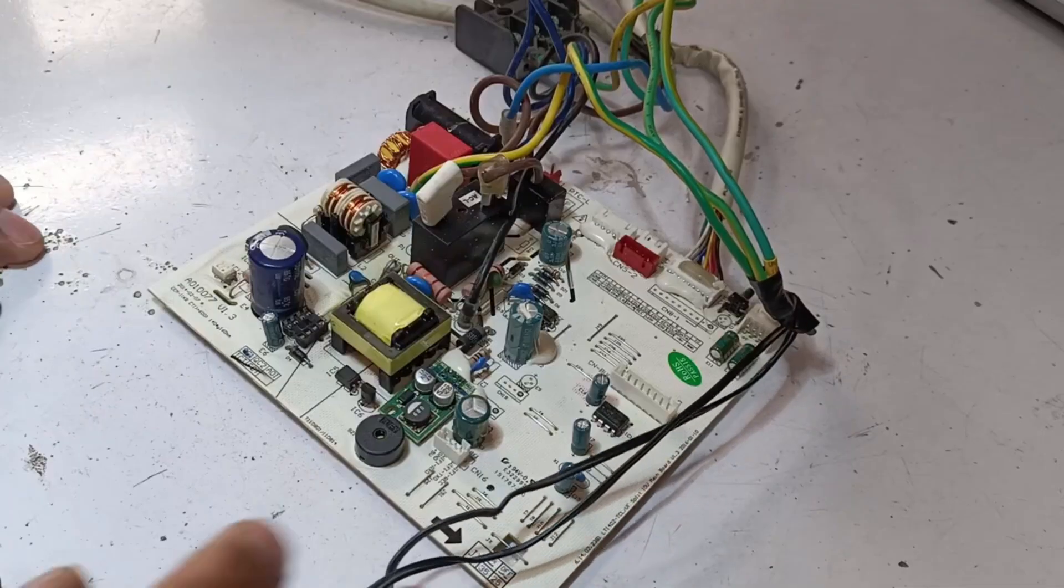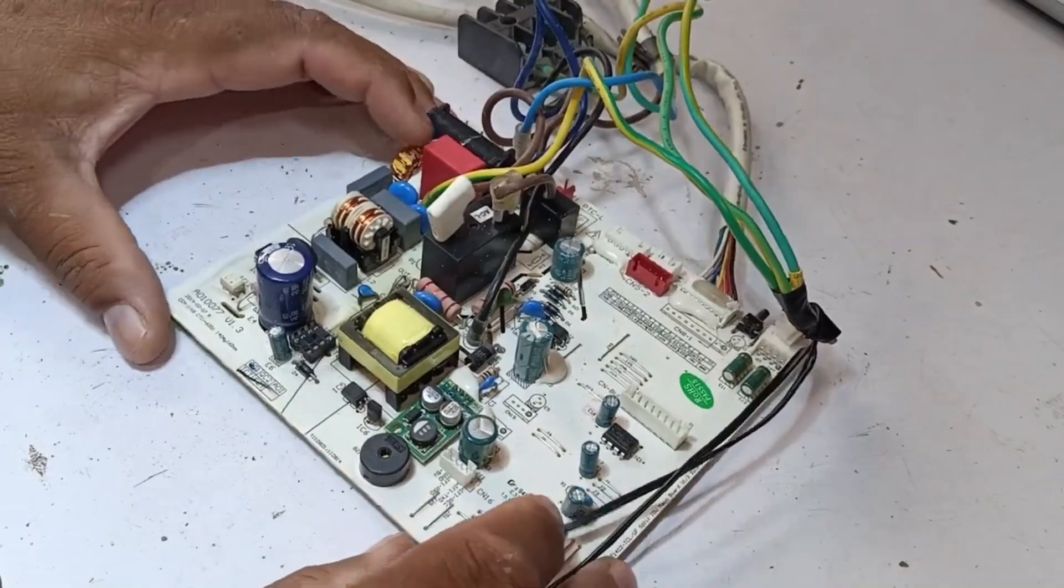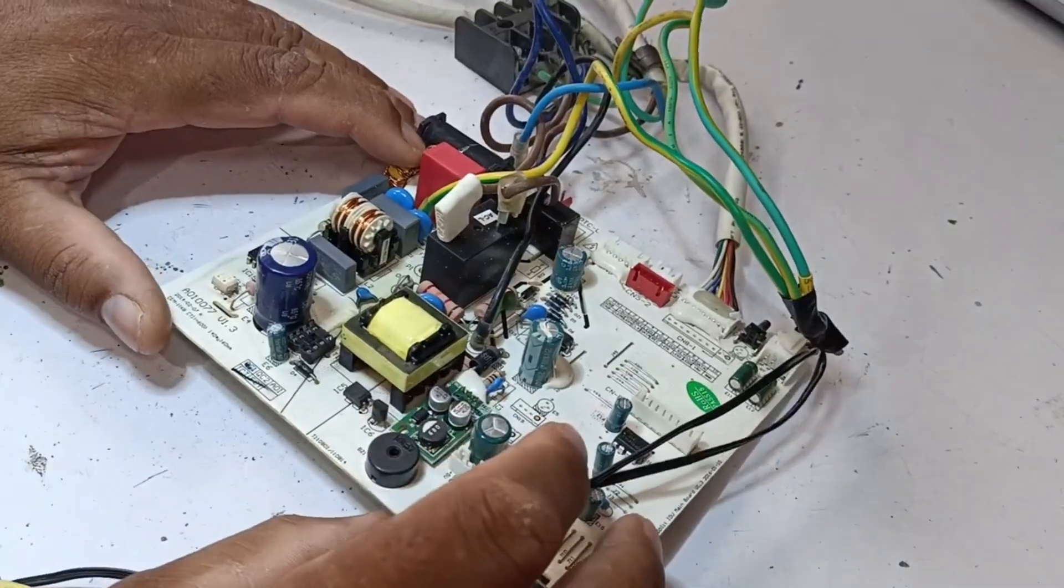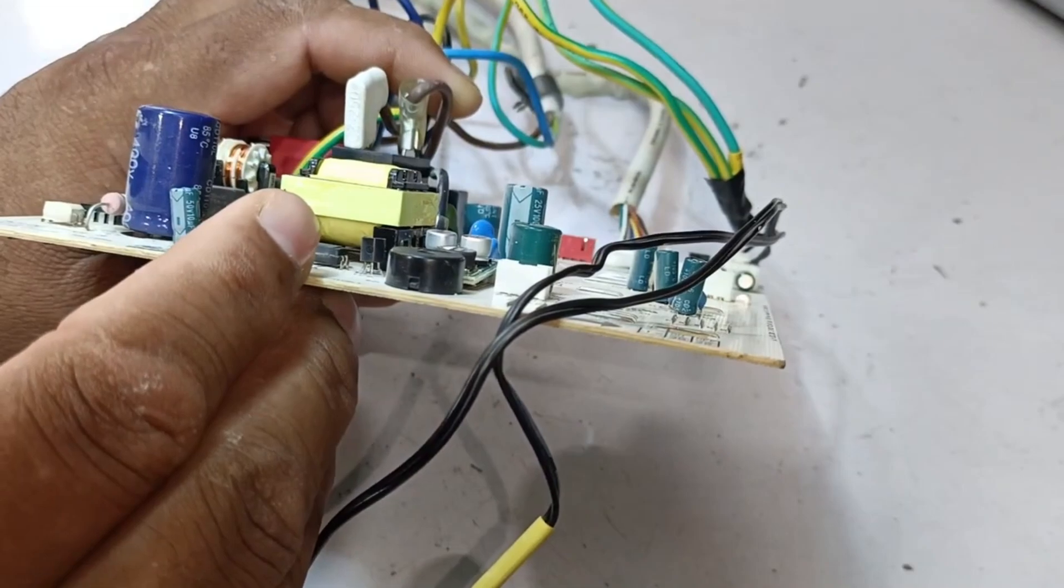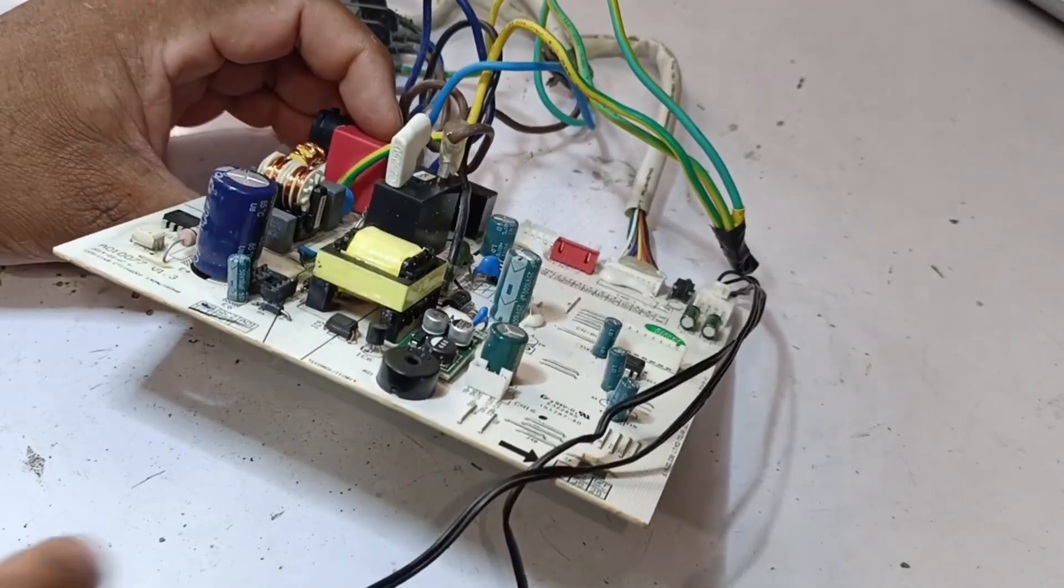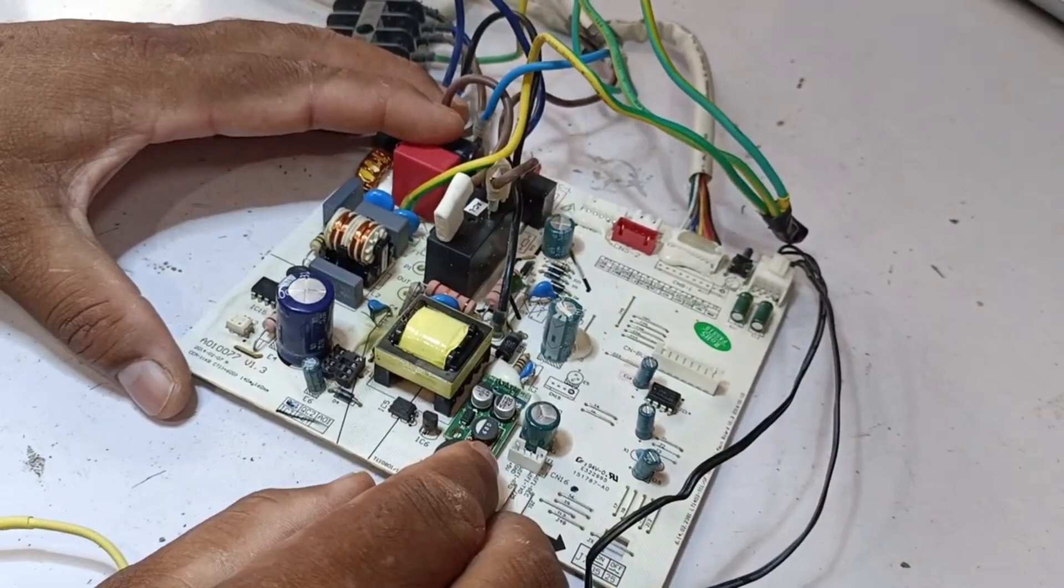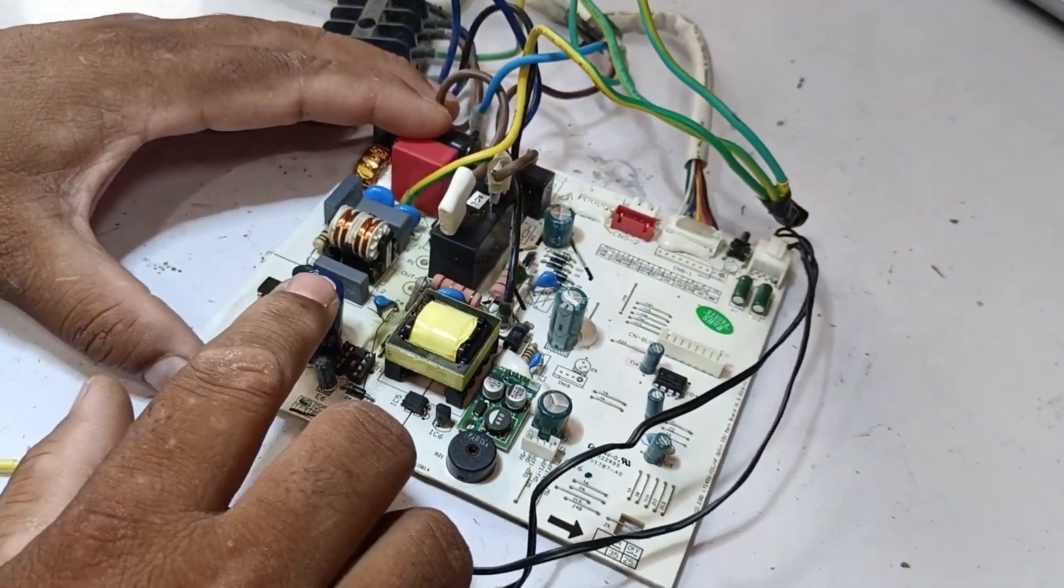Now, what's worth noting here is that when we physically inspect this capacitor, it's severely bloated. You can see that the cap has bulged upwards. Usually, when a capacitor reaches this state, it indicates that it's faulty internally. Due to its repeated failure, the IC might have also blown, so it's very important to replace this capacitor.